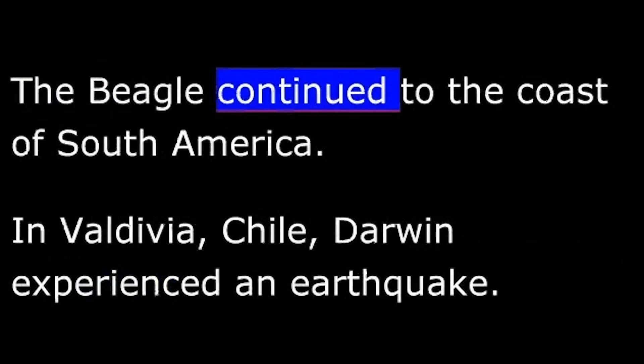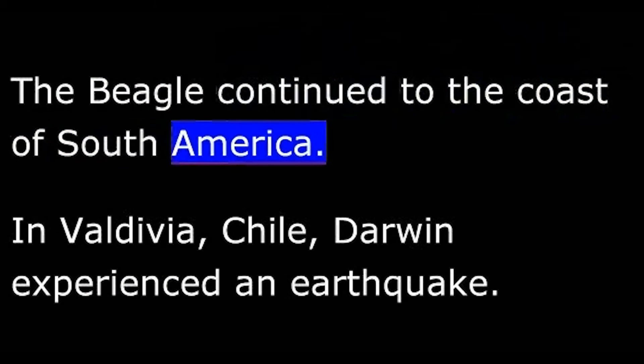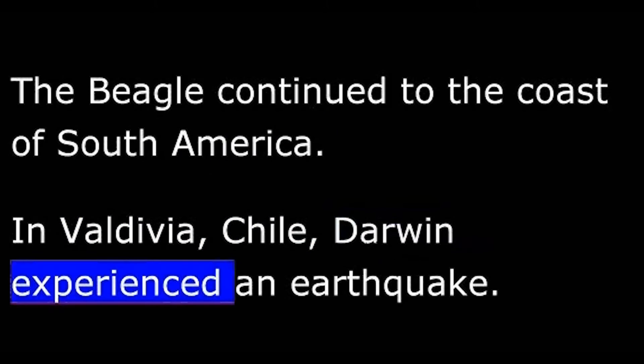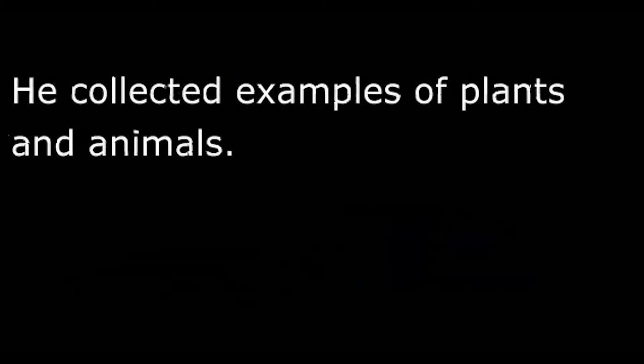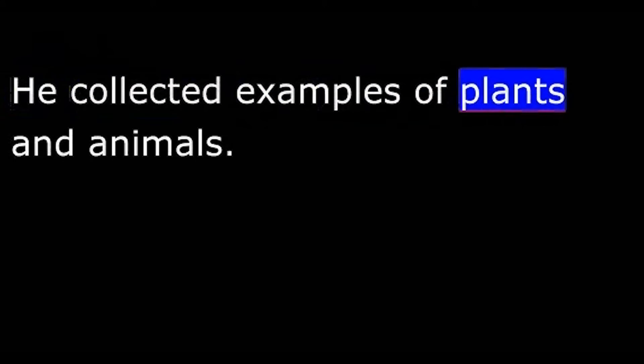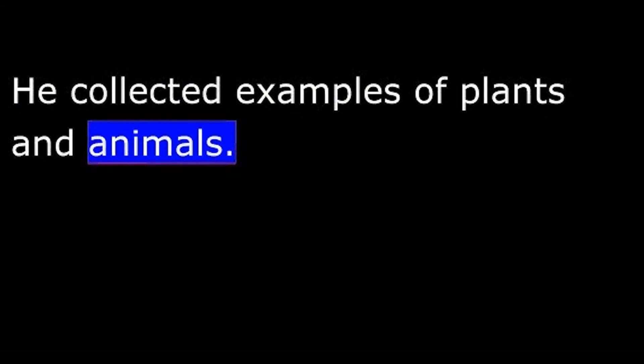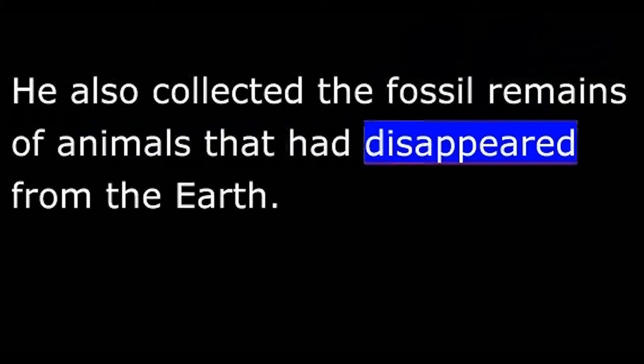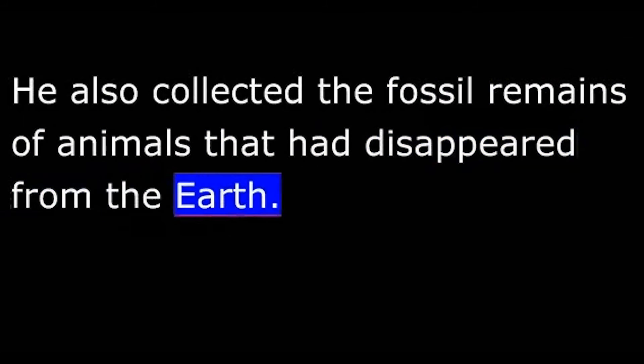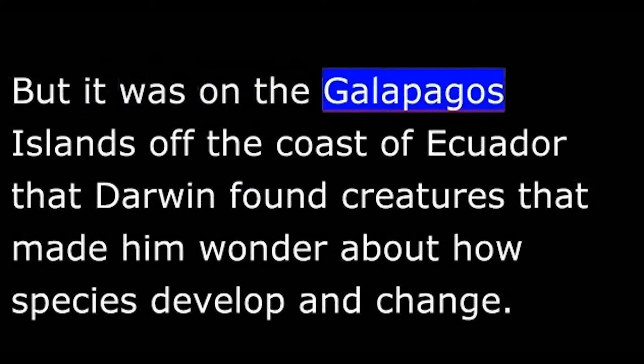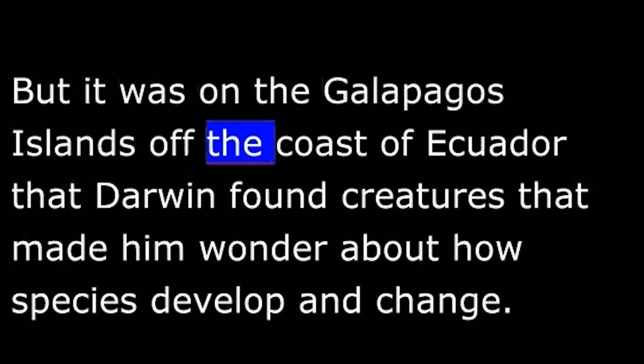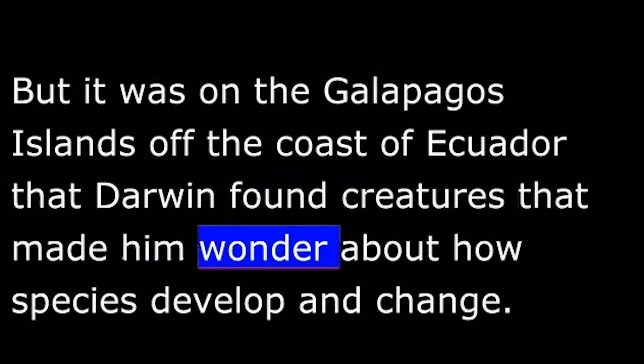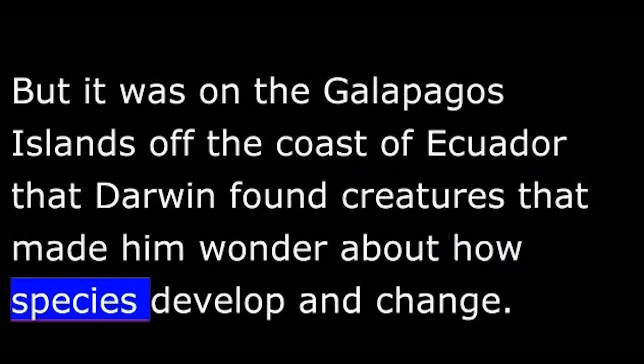The Beagle continued to the coast of South America. In Valdivia, Chile, Darwin experienced an earthquake. He collected examples of plants and animals. He also collected the fossil remains of animals that had disappeared from the Earth. But it was on the Galapagos Islands off the coast of Ecuador that Darwin found creatures that made him wonder about how species develop and change.